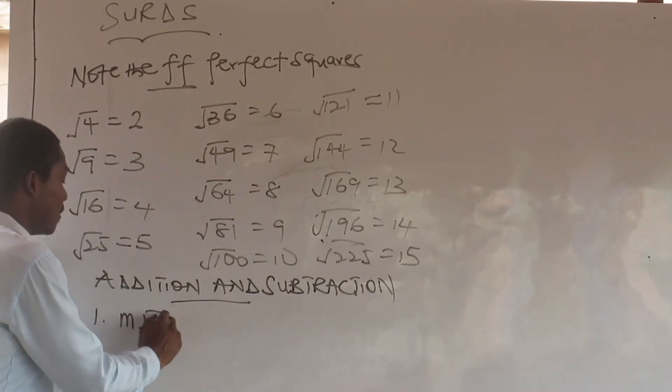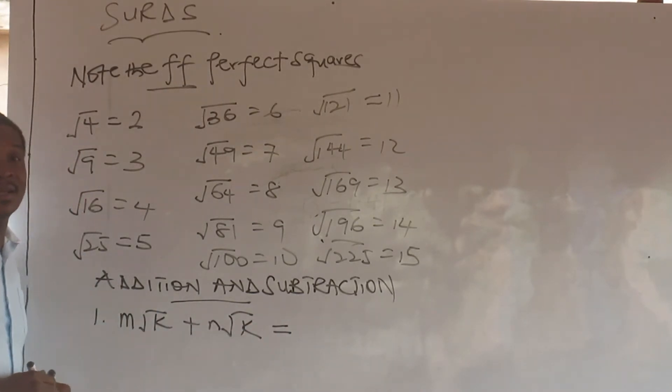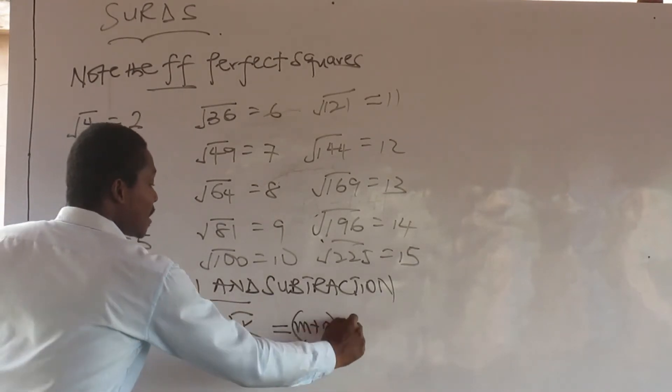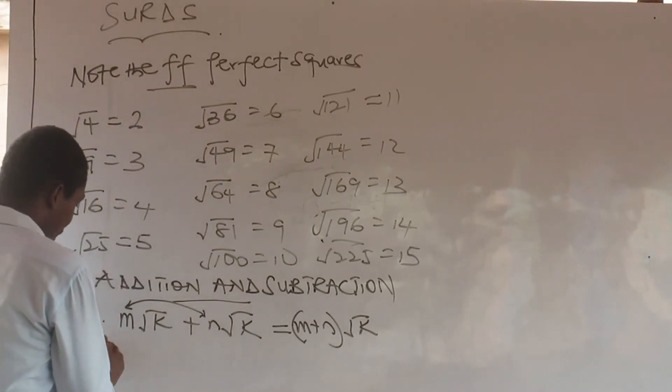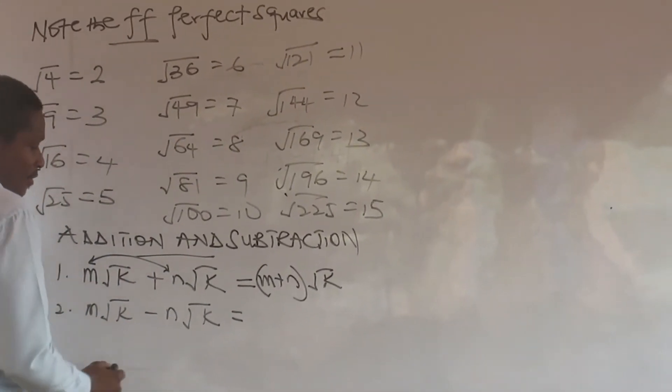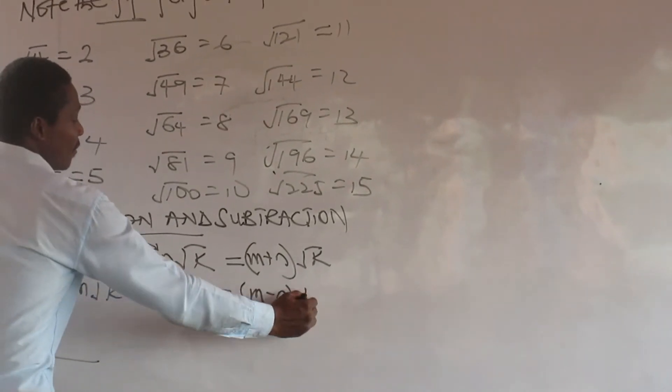So we are going to have M root K plus N root K. How do we add this? Before you add surds, make sure those in the root are compatible. Again, make sure the elements in the roots are compatible. They should be the same. So if they are the same, you just have to put those outside together. This way, you factor one. That is how to add. Now we have M root K minus N root K. So I can subtract them because the elements in the roots are the same. So we have M minus N all root K.